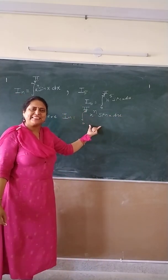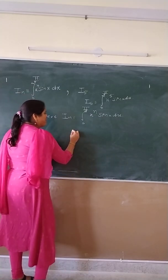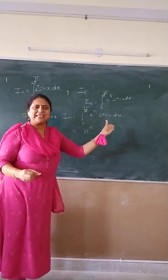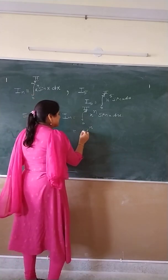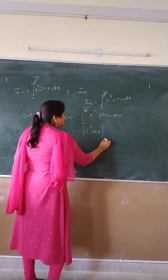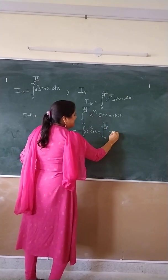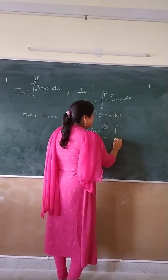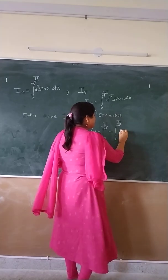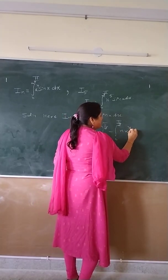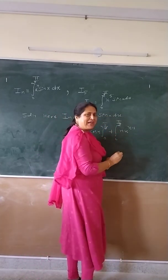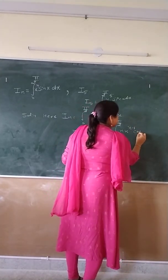Now we have to integrate this. We will integrate it by parts. You will get the first function times the integration of the second. The integral of sin x is minus cos x, so we get minus cos x evaluated from 0 to π/2, minus the integration from 0 to π/2 of the derivative of the first function, which is n·x^(n-1), times the integral of sin x, which is minus cos x dx.